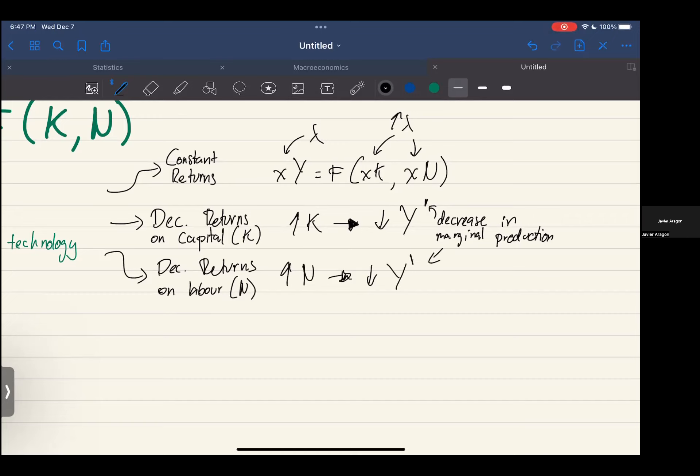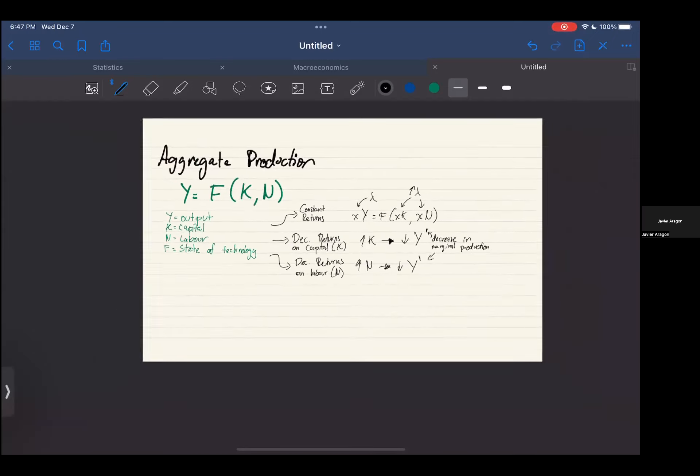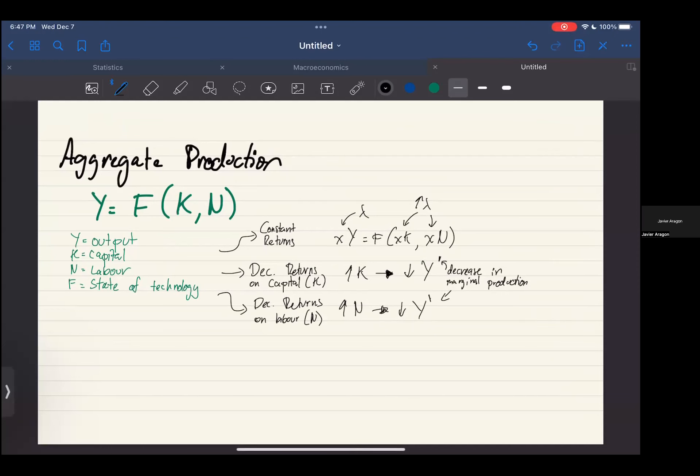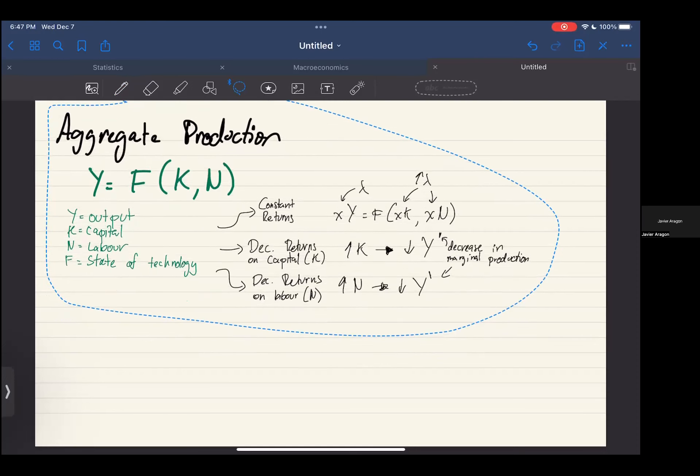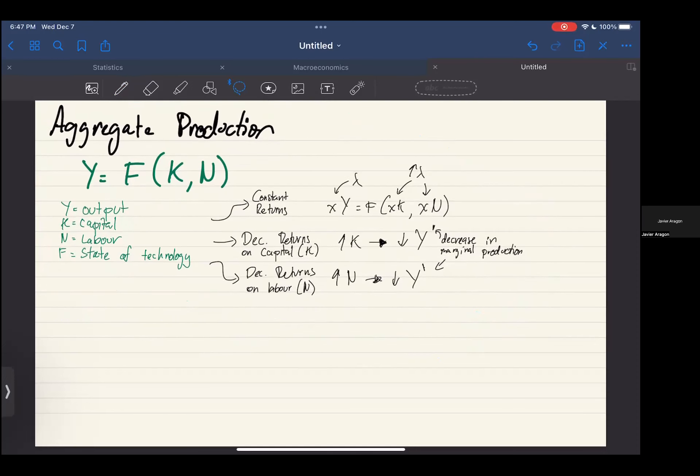You also have decreasing returns on labor, this is N. So you have increasing N will yield decrease in marginal production. What this means is that if you suddenly add one worker, in constant returns you add one worker you get one more unit of output. Here you add one worker you're going to get half a unit of output. There's a point where you can even go negative and workers start getting in the way of each other and you actually lose production. We saw this in microeconomics.